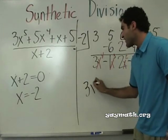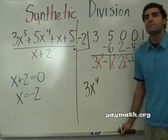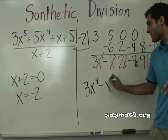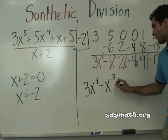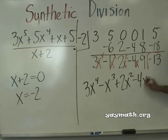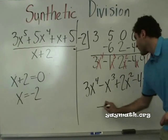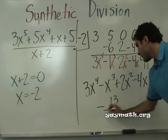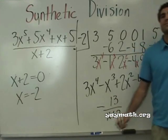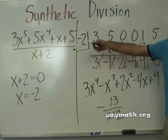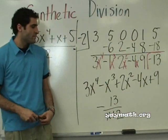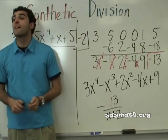So the answer is 3x to the fourth minus x cubed plus x squared minus x plus something, over x plus 2. This problem could have taken a lot of time with long division — that would have been ridiculous.